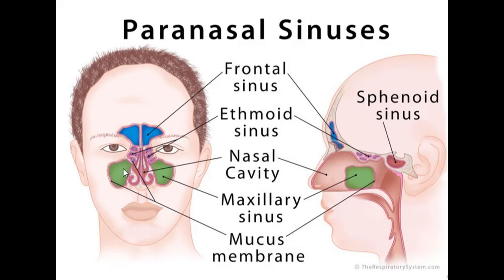To recap the maxillary sinus: it's pyramidal in shape, it's the biggest of all the sinuses, and it's located in the maxillary bone. Now let's move on to the sphenoid sinus.